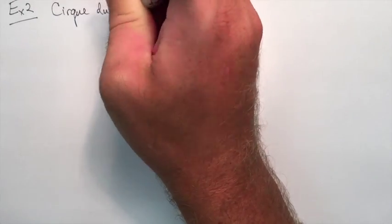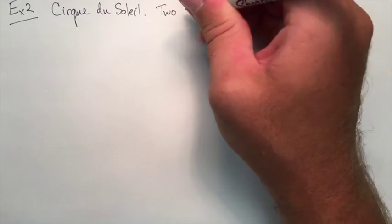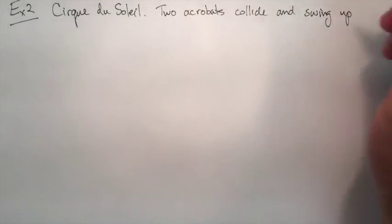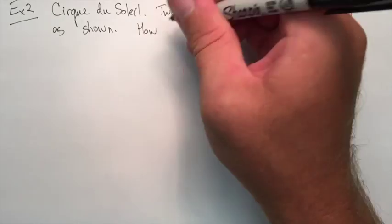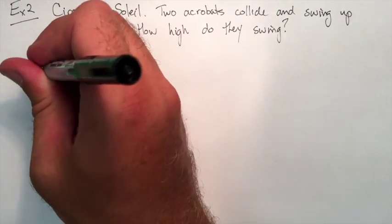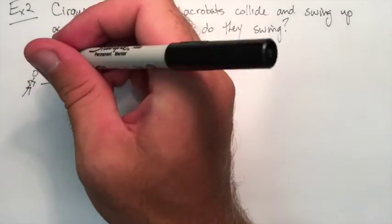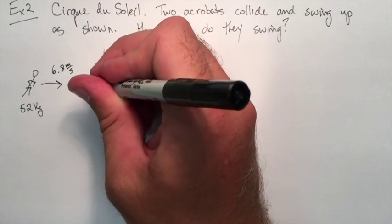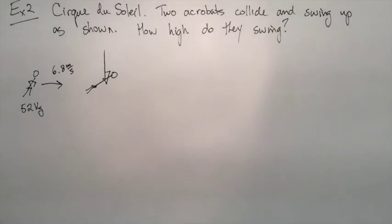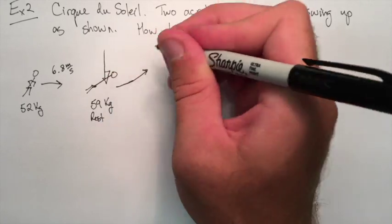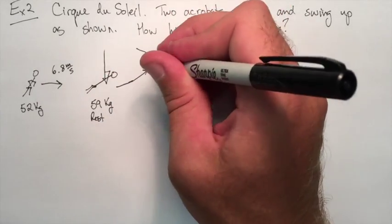Let's do a second example here based on Cirque du Soleil. We have two acrobats that are running together. One of them is going to be hanging on a rope and the other one is going to be running on the floor. When the person runs to the person on the rope, they're going to swing up to some certain height. The first person running forward at 6.8 meters per second has a mass of 52 kilograms. They're going to run and jump into the arms of the person holding onto the rope, who has a mass of 59 kilograms and is initially at rest. That running person is going to combine with that person and swing up to some height.